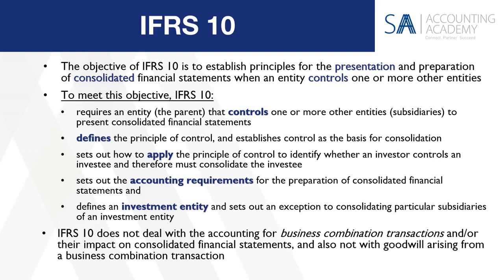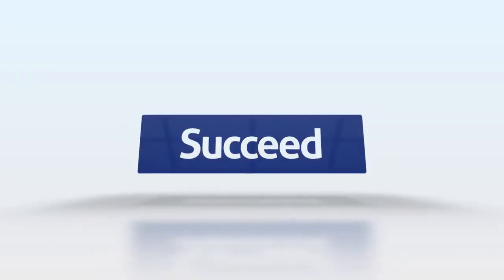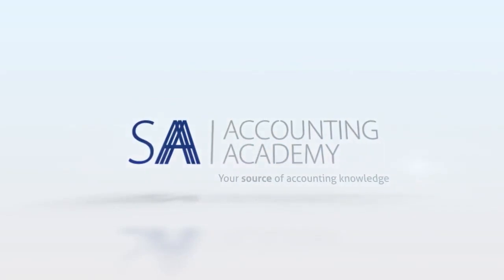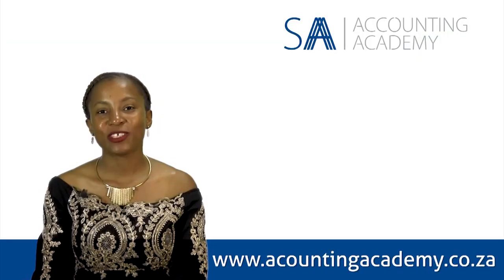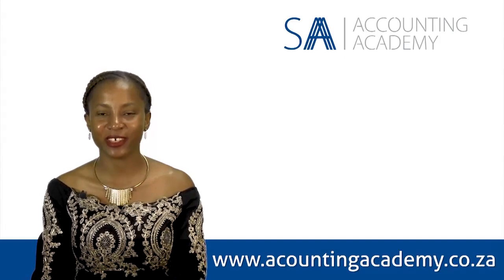Once we've established that there is control, IFRS 3 deals with the rest of that acquisition transaction on the date of acquisition. IFRS 3 basically requires that all assets and liabilities acquired in a business combination are measured at their acquisition date fair values and not at cost price. I hope that you enjoyed that video. For more of our webinar videos, go to www.accountingacademy.co.za. Thank you and have a lovely day.